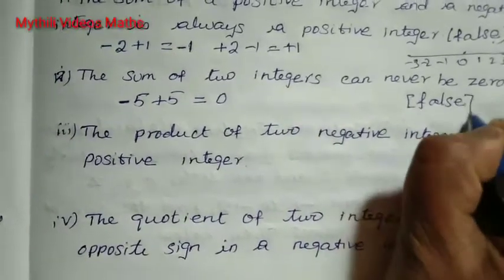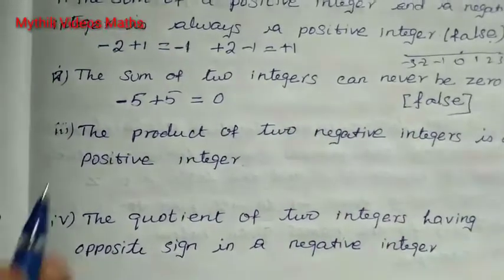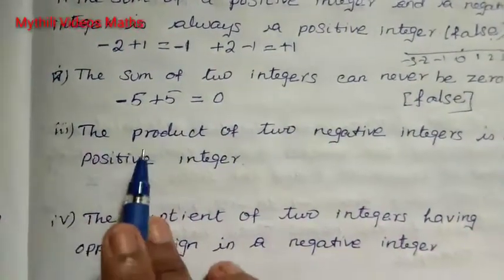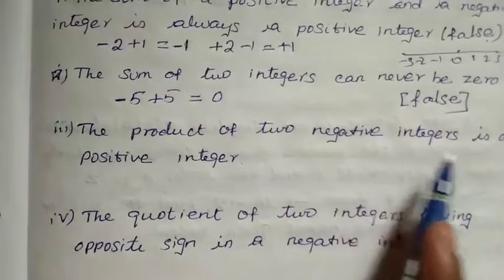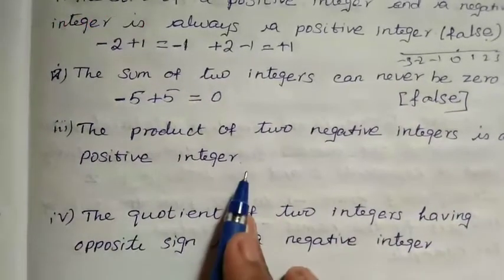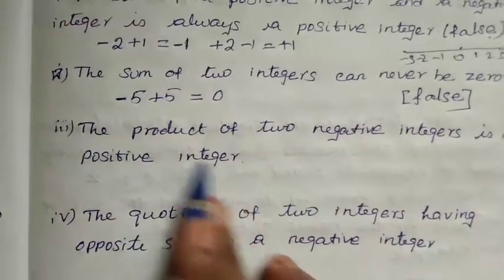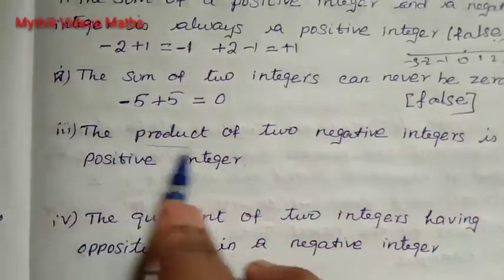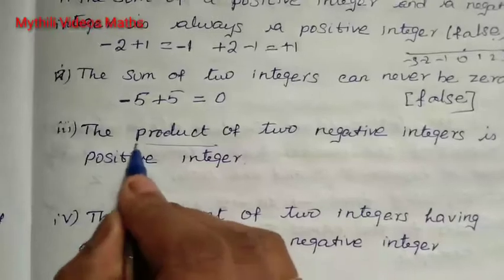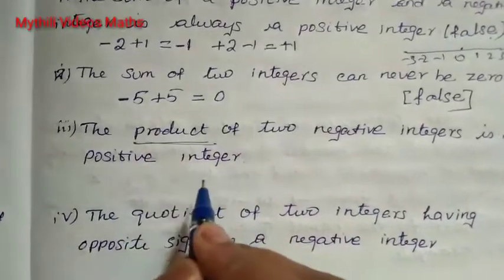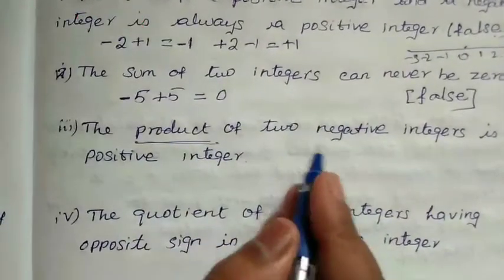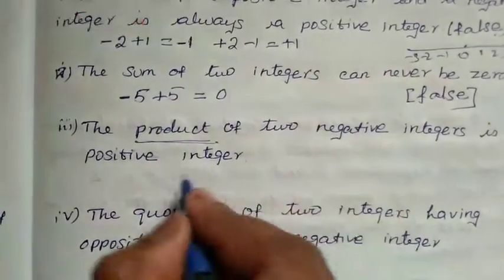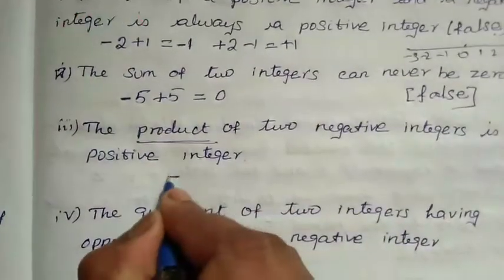So this statement is also false. And then the third one: the product of two negative integers is a positive integer. Product means we have to multiply.